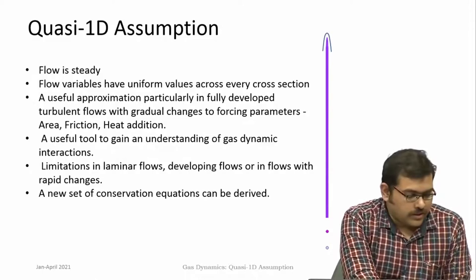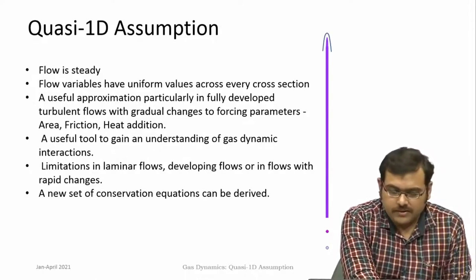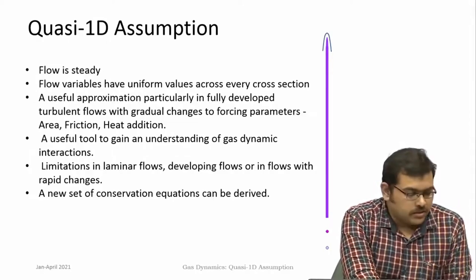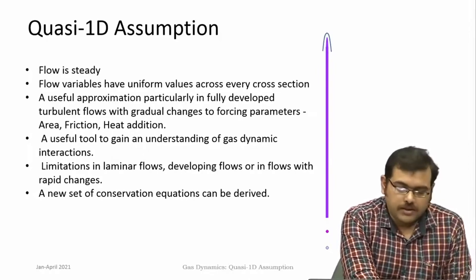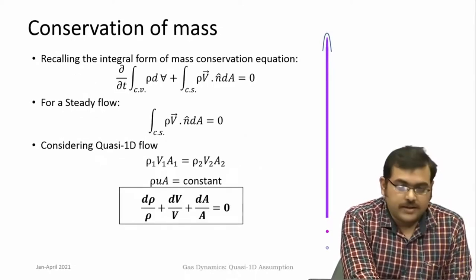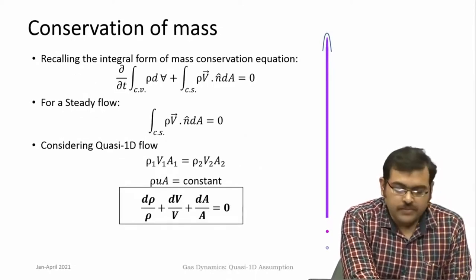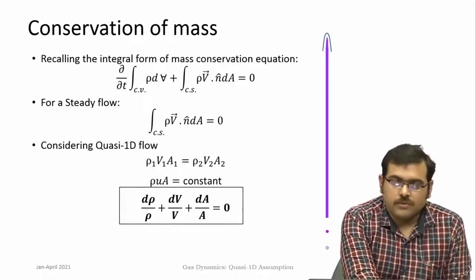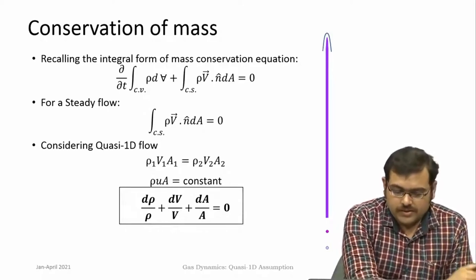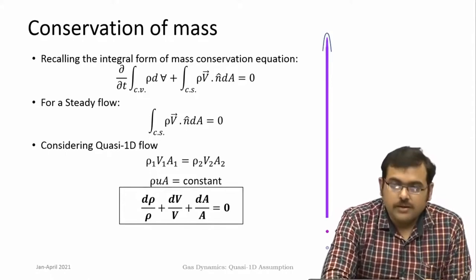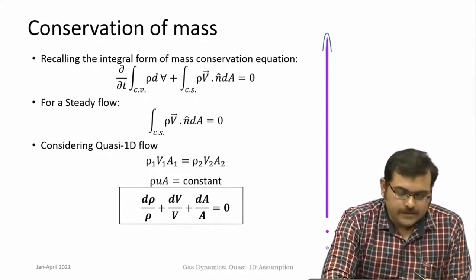Taking this assumption, one can derive a separate set of conservation equations. Bear in mind that the quasi 1D assumption is applicable only when there are gradual changes to area, friction, and so on. If sudden changes in area happen, then it is not possible to use this approach to come up with reasonable estimates.